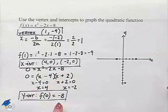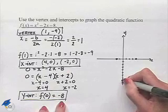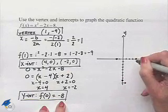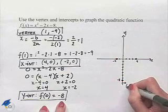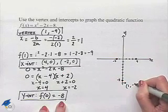And we have a y-intercept at -8. And so we have our 4, -2. This is -8. And our vertex was at (1, -9).